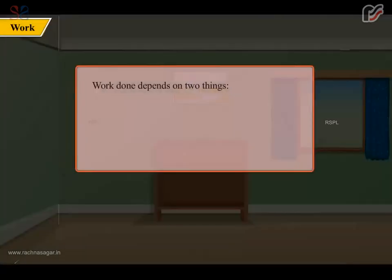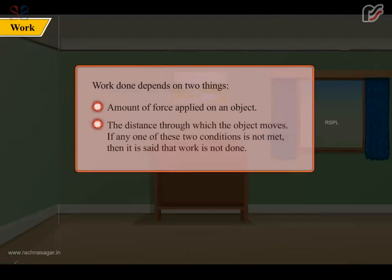Work done depends on two things: the amount of force applied on an object, and the distance through which the object moves. If any one of these two conditions is not met, then it is said that work is not done.